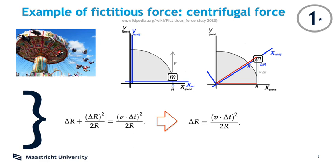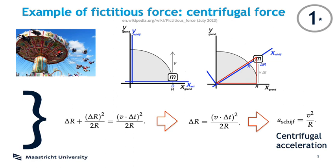No matter how we do it, we have now found delta r, and we can take two time derivatives, which gives us the acceleration of the mass as measured along the blue x-axis. That acceleration is v squared over r. If you multiply this with the mass of the ball, that gives you the well-known formula for the centrifugal force. So in this example we explicitly see that the centrifugal force is not a real force — it's a fictitious force. The mass is happily moving along in a straight line, but viewed from the non-inertial system of the merry-go-round.